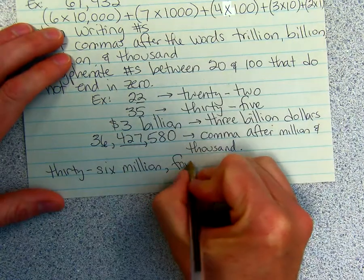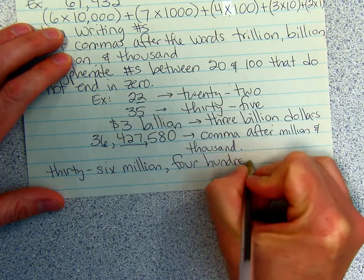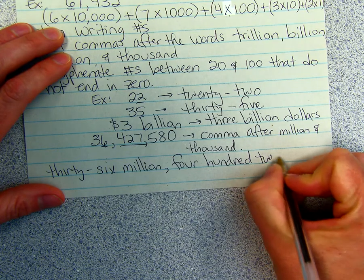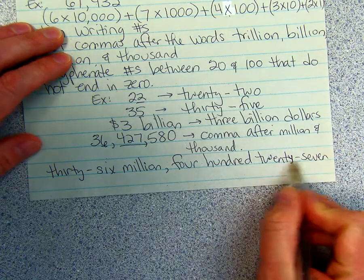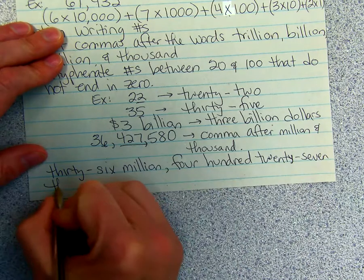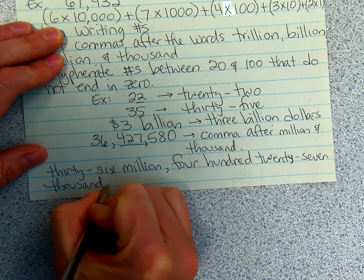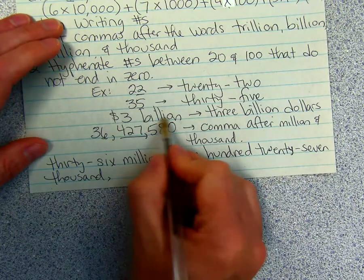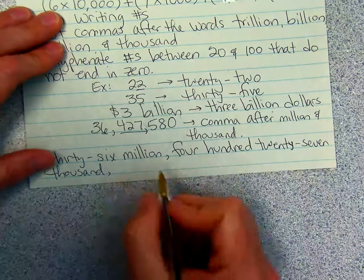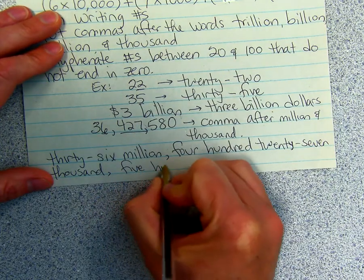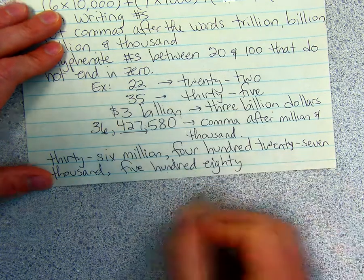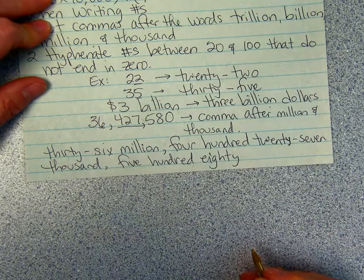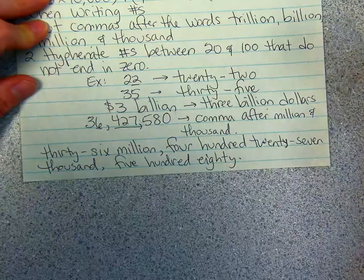Notice that 27 does not end in 0, so you hyphenate it. And then this is the thousands place, so you write thousand comma. Then you just read this number, 580. Notice that 80 ends in 0, so there's no hyphen there. It's just one word. That's the end of lesson 5.